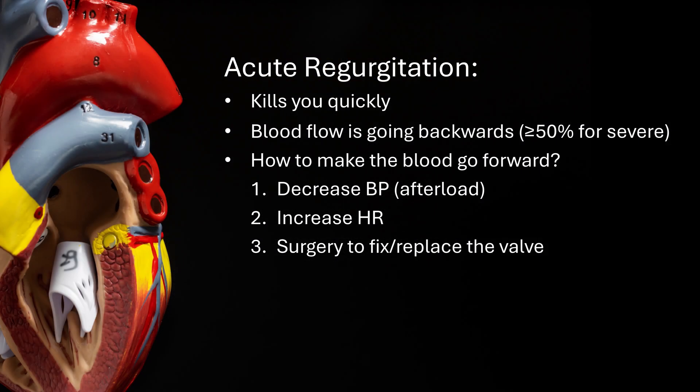Acute regurgitation kills you quickly. Blood flow is now going backwards that should be going forwards, and generally greater than 50% chamber fill is classified as severe. So how do you make the blood flow go forward more? You need to decrease the blood pressure or afterload, you need to increase the heart rate to improve cardiac output, and you need a surgeon to fix or replace the valve.